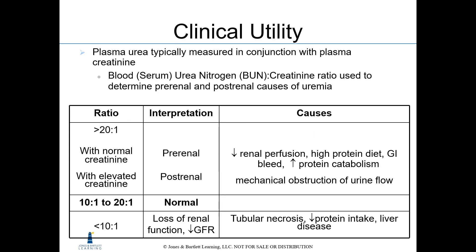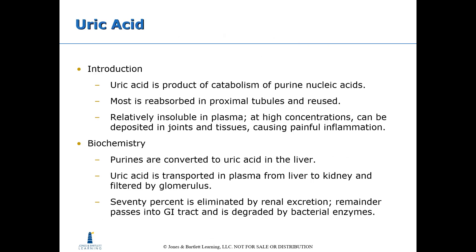The BUN-to-creatinine ratio (blood or serum urea nitrogen to creatinine) is used to determine pre-renal and post-renal causes of uremia. If the ratio is greater than 20:1 and creatinine is normal, pre-renal causes are considered — such as decreased renal perfusion, high protein diet, GI bleed, or increased protein catabolism. If creatinine is elevated, post-renal causes are considered, typically mechanical obstruction such as a cyst, tumor, or stone. A ratio of 10:1 to 20:1 is normal. A ratio less than 10:1 suggests loss of renal function, decreased GFR, tubular necrosis, decreased protein intake, or liver disease.